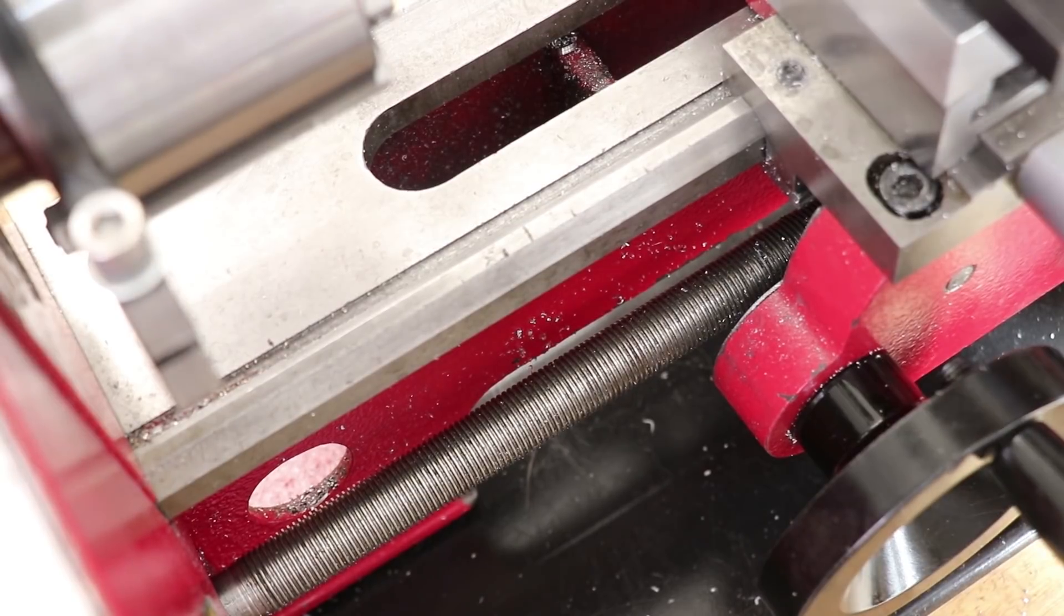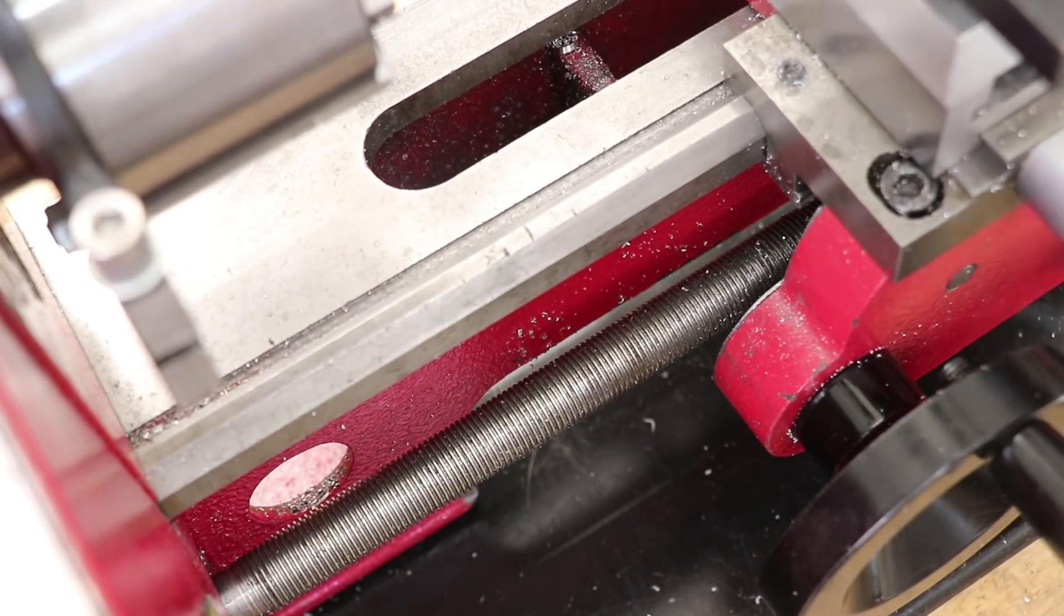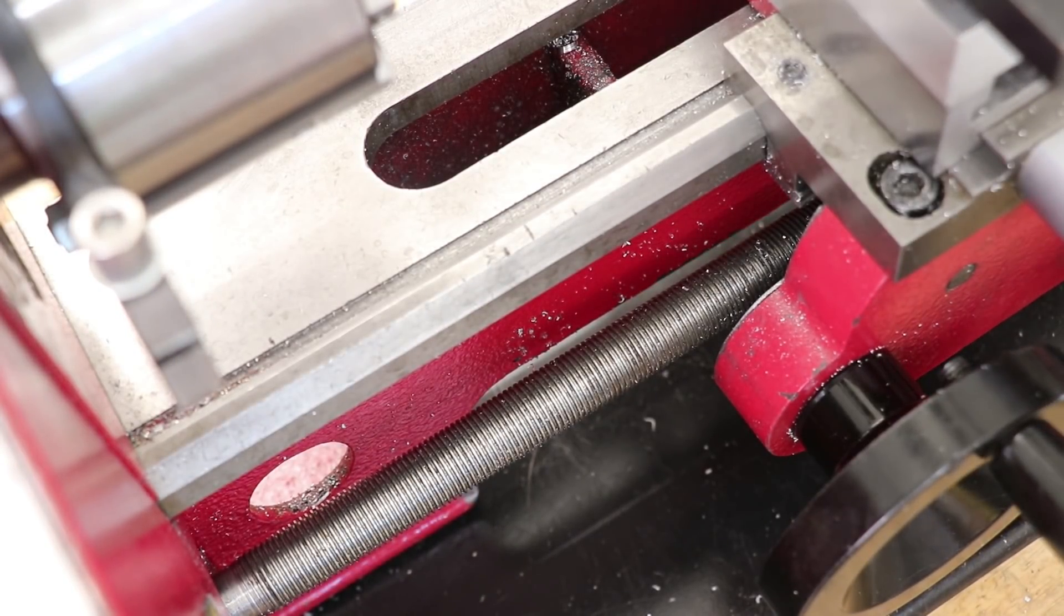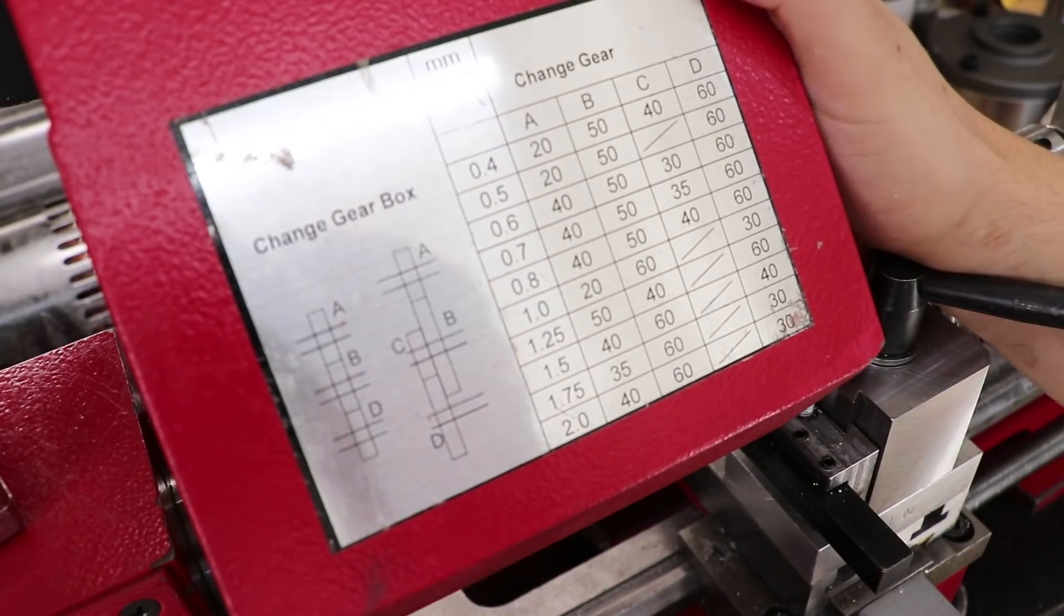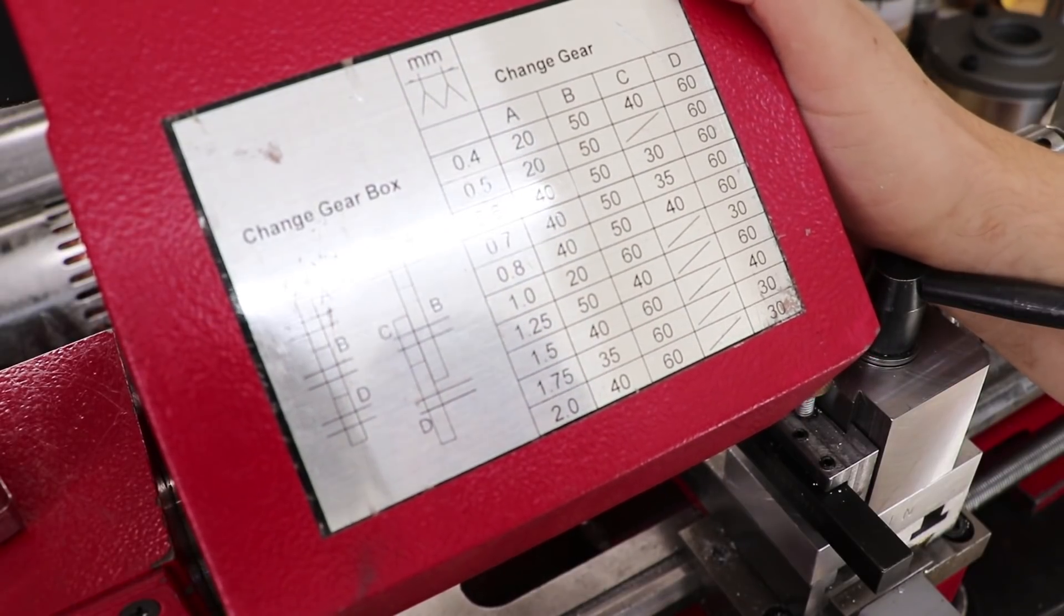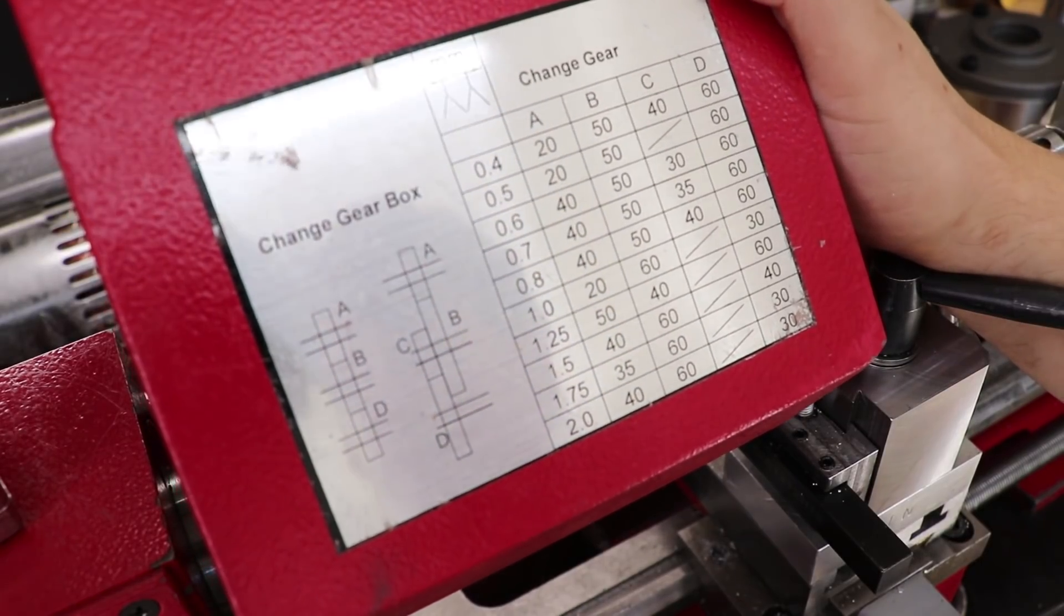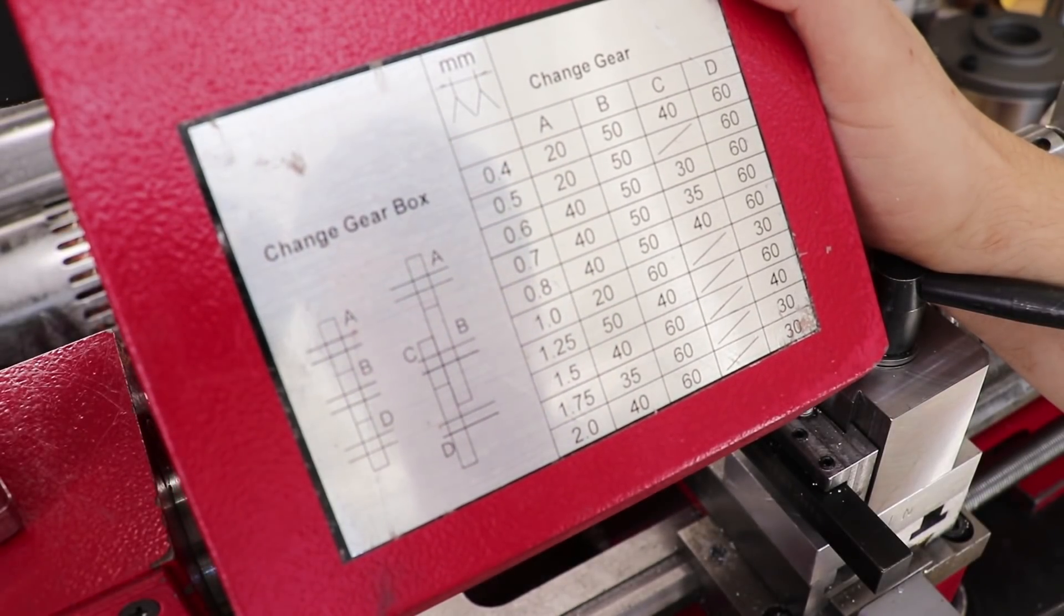Now here's the problem. The lead screw pitch on this lathe is 1.5mm. It's set up for metric. Thankfully though, this shouldn't stop us from cutting an imperial thread. It's not listed on the lathe, but thankfully there are gear ratios that will allow me to cut imperial threads with this lathe.